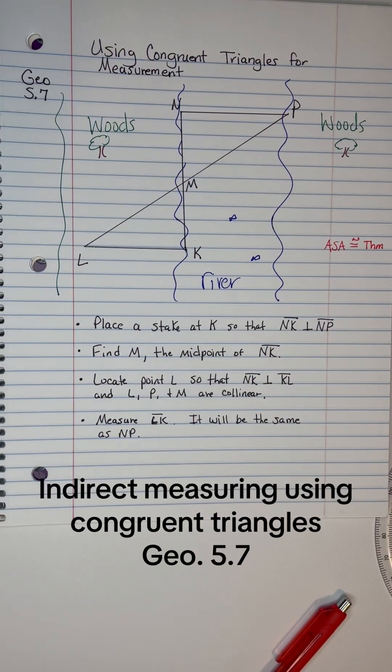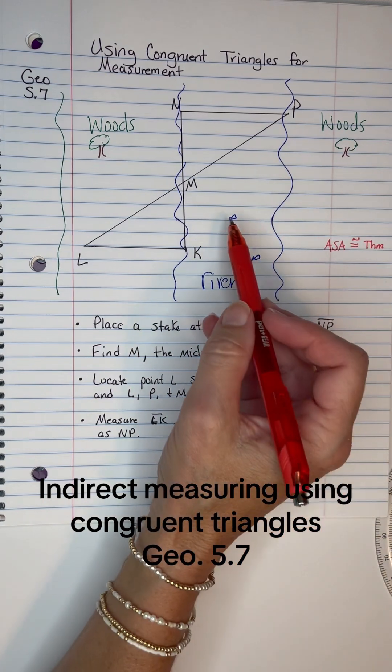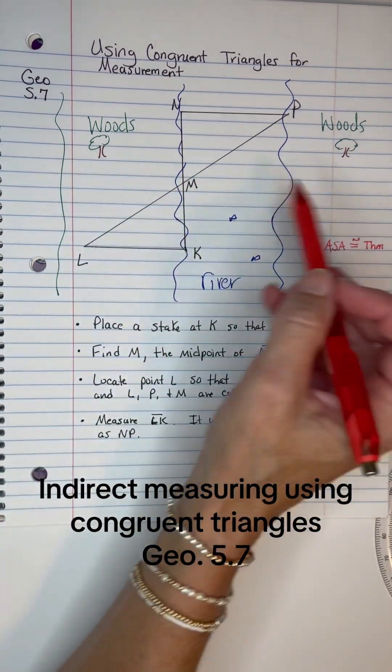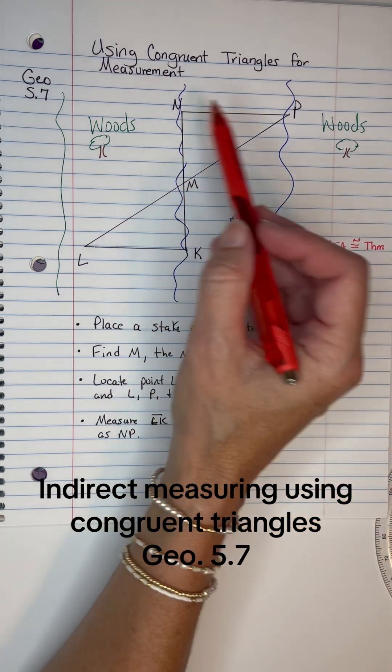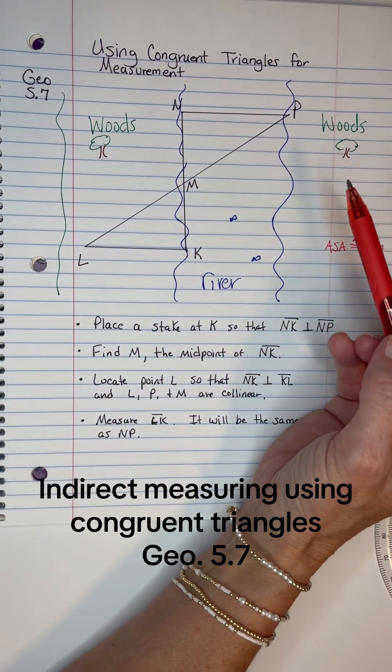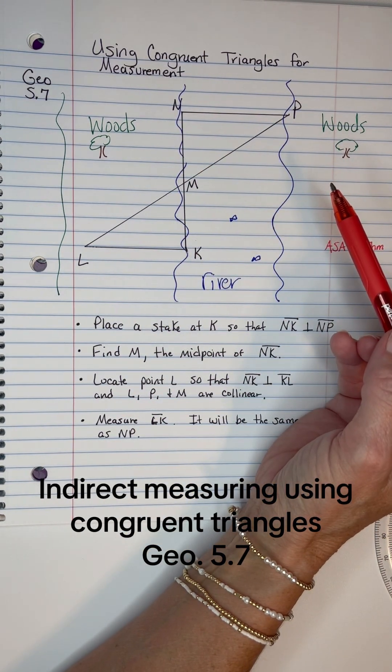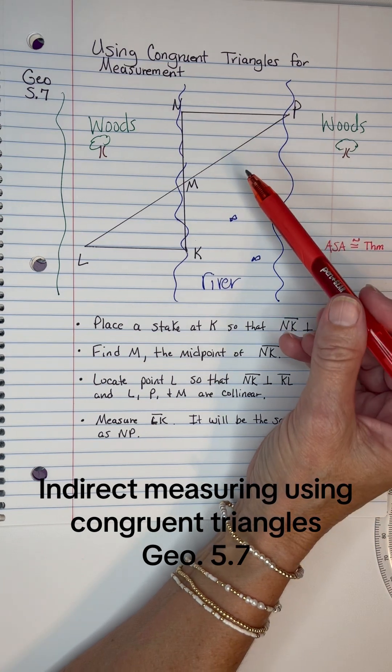Let's talk about measuring indirectly. For instance, we've got a river here, notice my little fishies, and it's surrounded by woods. If we wanted to measure across that river indirectly, we can use congruent triangles to do so.